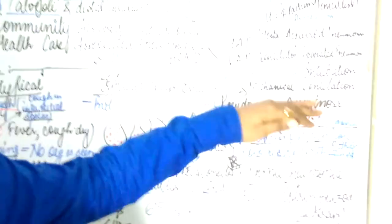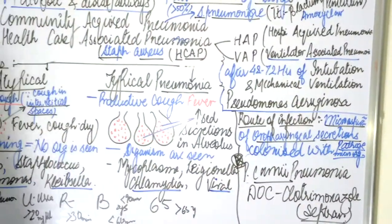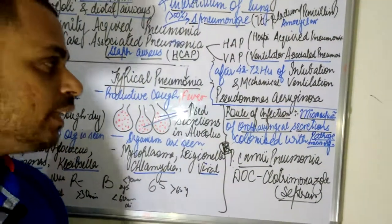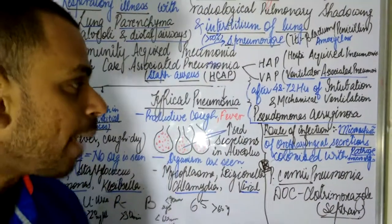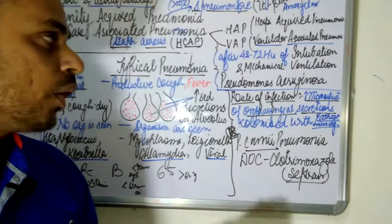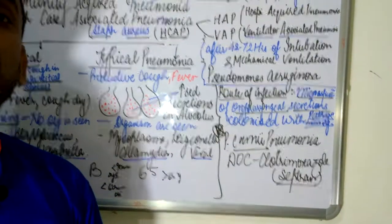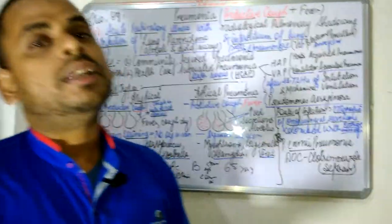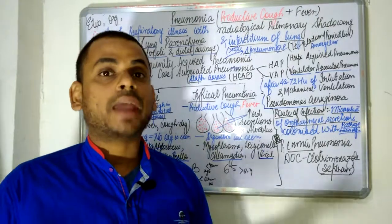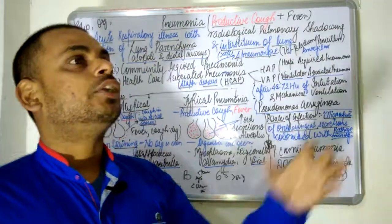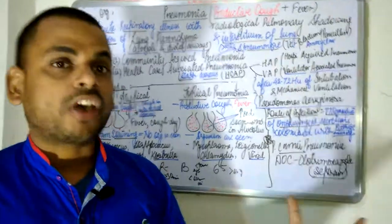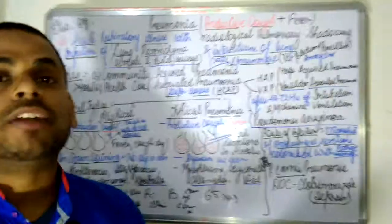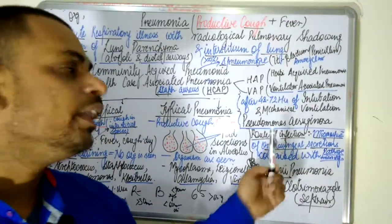The route of infection in pneumonia mostly occurs due to aspiration of oropharyngeal secretions colonized with pathological microorganisms. Whenever there is micro-aspiration of pathological microorganisms through oropharyngeal secretions, pneumonia is manifested. It can also occur through aerosolization — that is, droplets of microorganisms from productive cough getting inhaled — and hematogenous spread from a distant site can also be a route of infection.